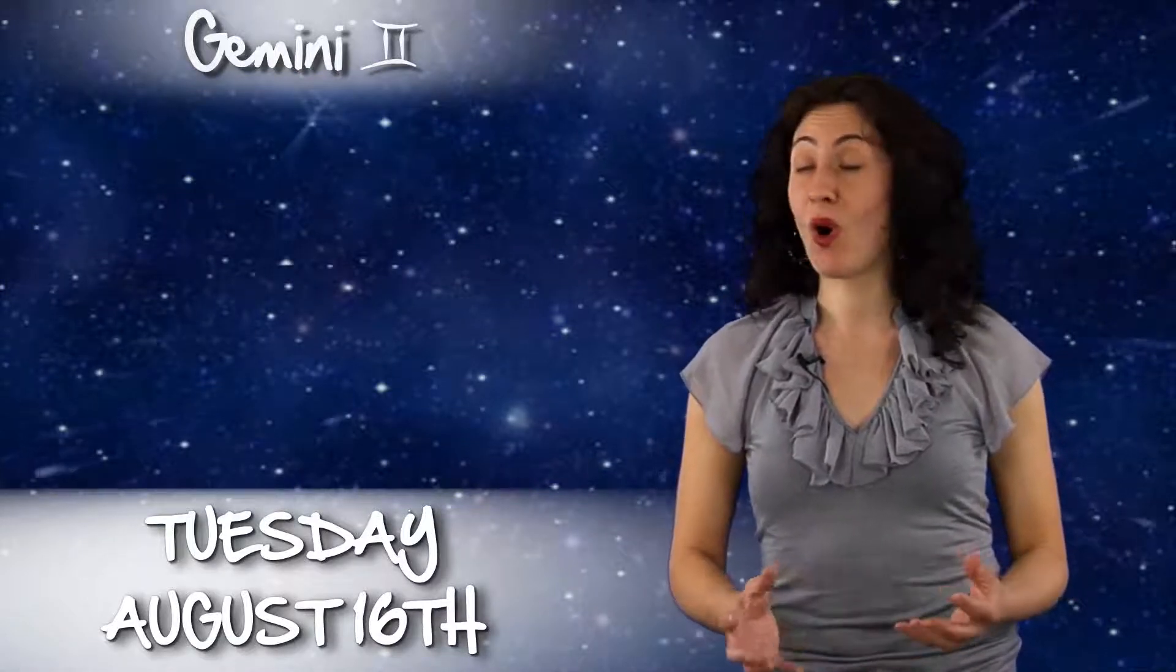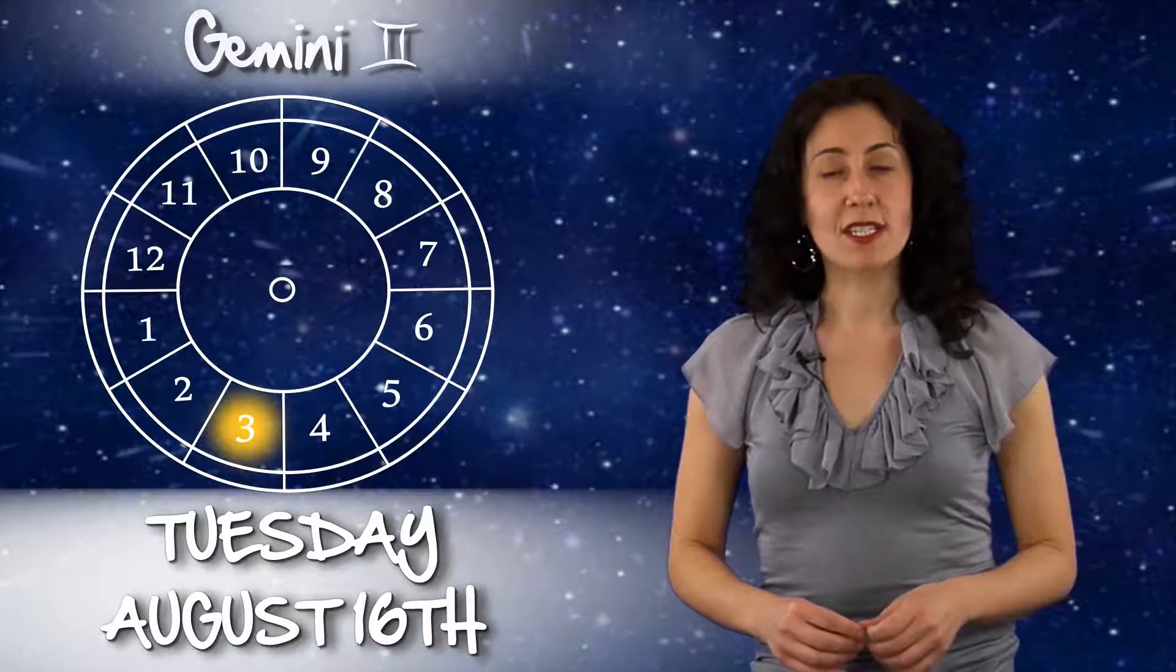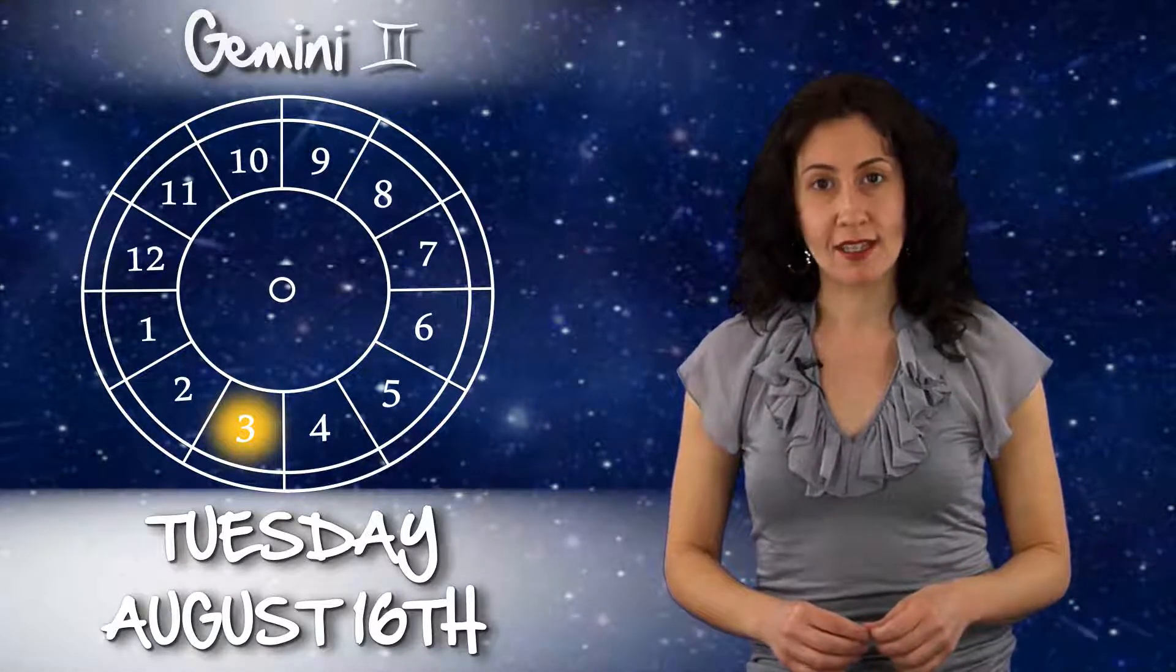Gemini, on Tuesday, the Sun, Venus and Mercury all embrace in your communication sector. Yes, we know Mercury is retrograde, however, the Sun and Venus together is a gorgeous aspect, and you are going to have some positive development in communications related matters.